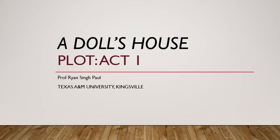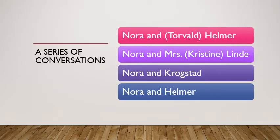Hello everyone, this is Professor Ryan Paul. In this video I'm going to be talking about Act One of Henrik Ibsen's play 'A Doll's House,' going into the plot and talking about the patterns of events, images, and motifs that come up in this first act. There are a few other events in between, but the primary events form a series of conversations: first between Nora and Torvald Helmer, then Nora and Mrs. Linda, then Nora and Krogstad, and finally Nora and Helmer once again. So it's a series of conversations beginning and ending with the same person — a journey in which we see Nora's character and situation develop and unfold.